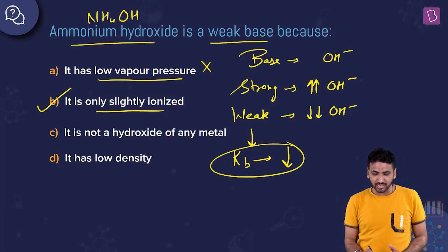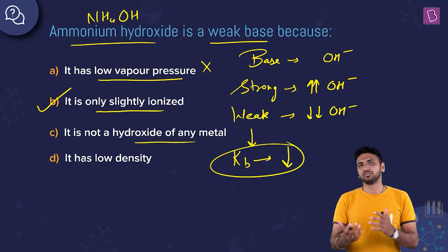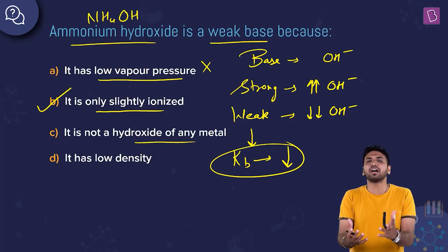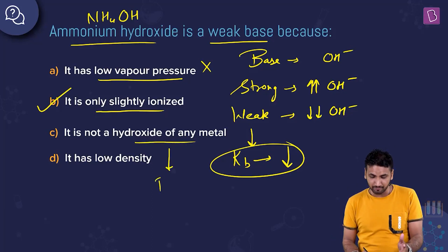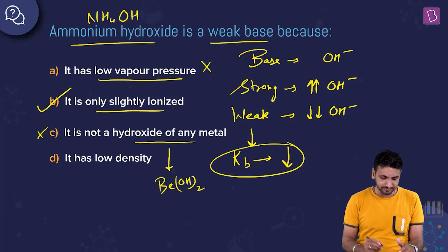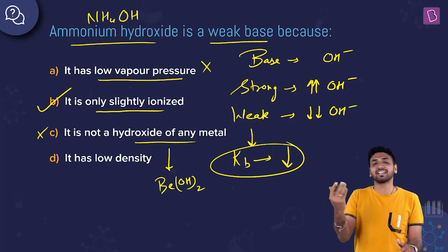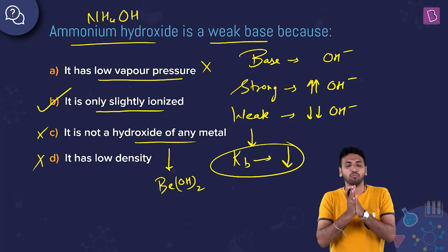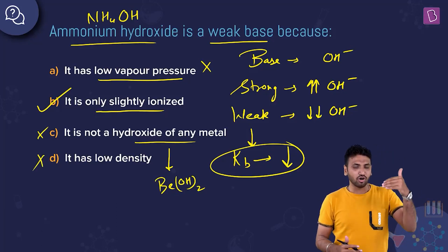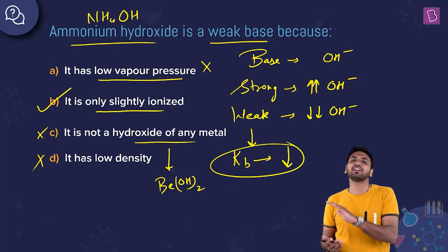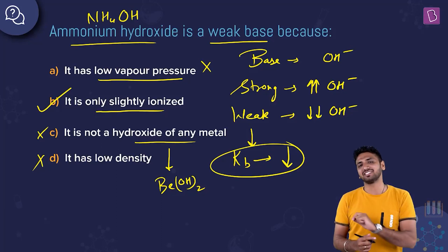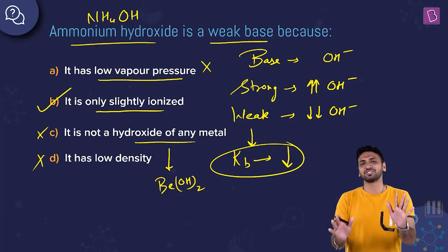Option C says 'it is not a hydroxide of any metal' — that's not a valid reason, because some metal hydroxides like beryllium hydroxide are also weak bases. Option D mentions low density, which has nothing to do with base strength. The most appropriate answer is option B: ammonium hydroxide is a weak base because it is only slightly ionized.